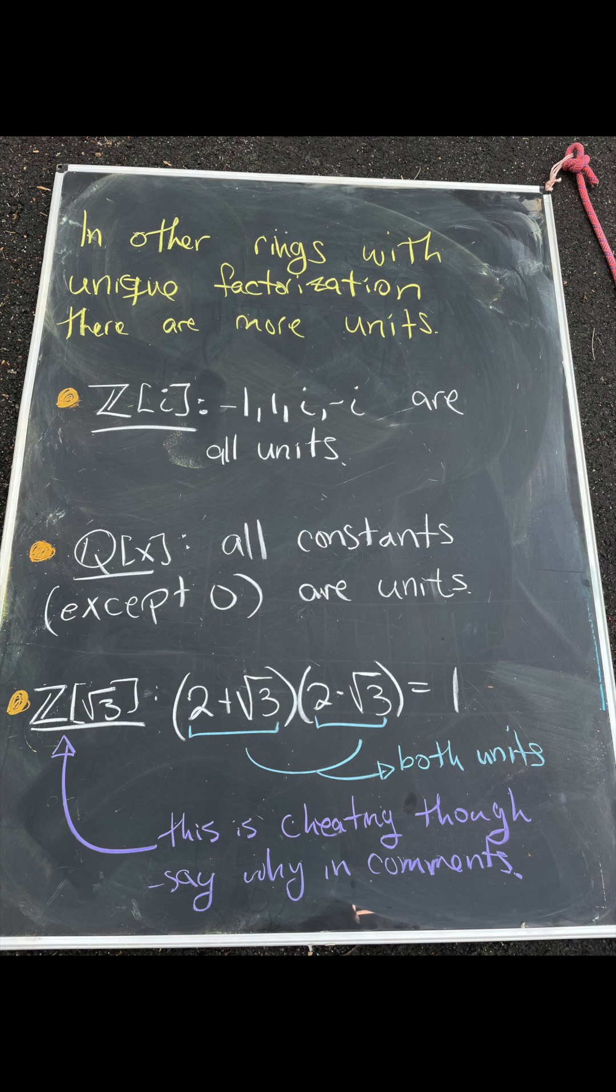And then if we look at something a little bit more obscure, like Z with the addition of the square root of 3, we'll find that 2 plus root 3 times 2 minus root 3 equals 1, making them both units.